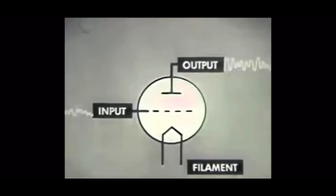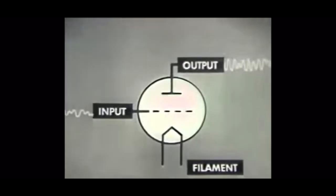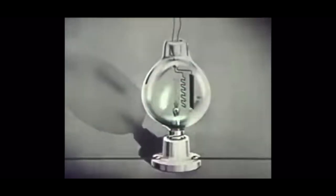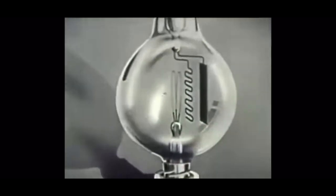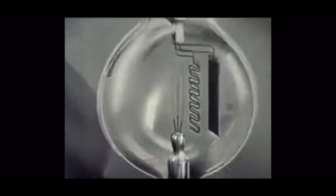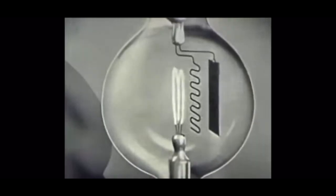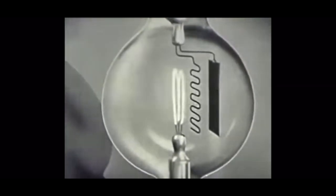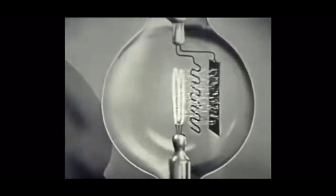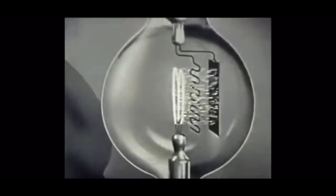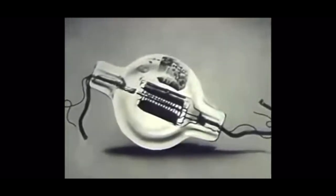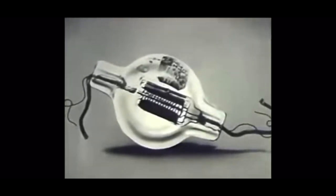He called this amplifying tube an Audion. Weak signals applied to the input or grid of the Audion caused similar and much stronger signals to flow from the plate or output. A few years later, two scientists — Dr. Arnold of Bell Telephone Laboratories and Dr. Langmuir of General Electric — working independently, found that by pumping out the Audion tube to create a very high vacuum, they obtained greater fidelity and stability.